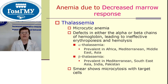Anemia due to decreased marrow response, for example thalassemia. Thalassemia is a hereditary hemolytic anemia and a microcytic anemia. Defects in either the alpha or beta chains of hemoglobin lead to ineffective erythropoiesis and hemolysis. Alpha-thalassemia is prevalent in Africa, Mediterranean, Middle East and Asia. Beta-thalassemia is prevalent in Mediterranean, Southeast Asia, India and Pakistan. Smear shows microcytosis with target cells.